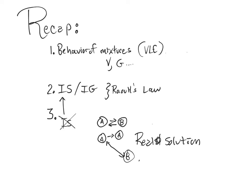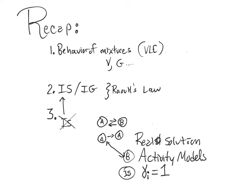And to do that, we are going to use activity models. And activity models tell us how far away we are from being an ideal solution. So an activity model helps you calculate this factor called gamma. And if something is an ideal solution, gamma equals 1. And when something isn't an ideal solution, gamma is a number that's bigger than, or sometimes smaller than, 1.